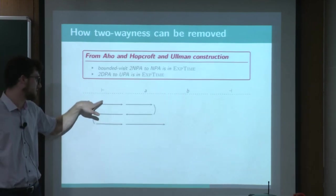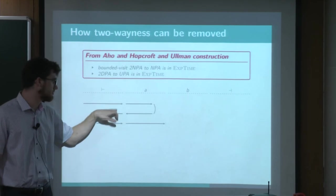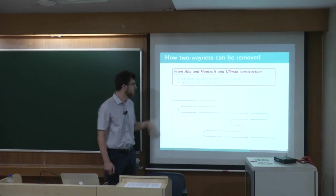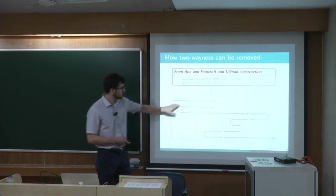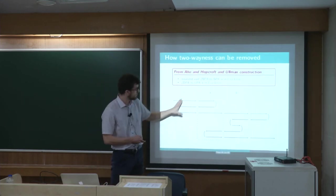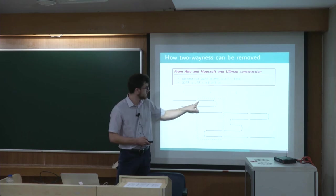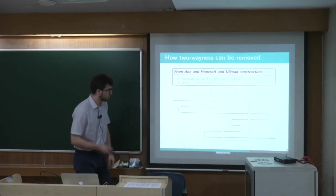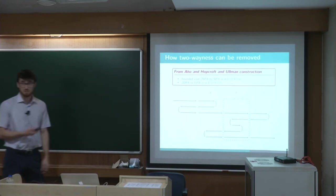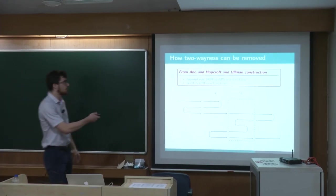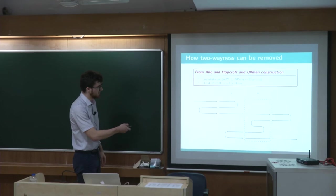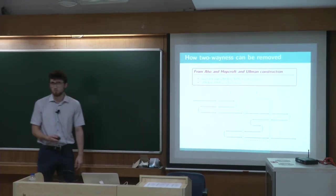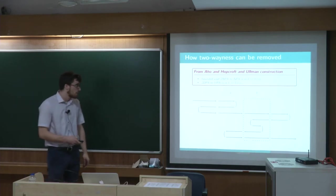and check that when we pass from one to another, that we indeed have the equality from one block to another. This guess is possible because we are bounded visit, and then the number of transition there is just the number of states at most.